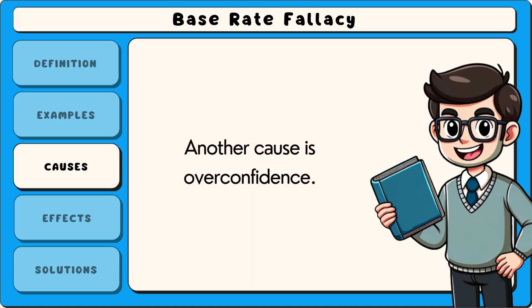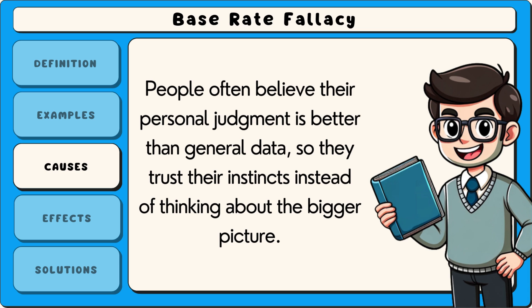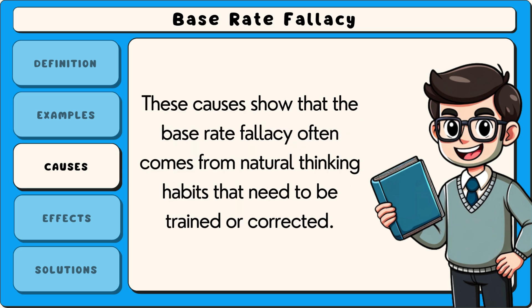Another cause is overconfidence. People often believe their personal judgment is better than general data, so they trust their instincts instead of thinking about the bigger picture. These causes show that the base rate fallacy often comes from natural thinking habits that need to be trained or corrected.